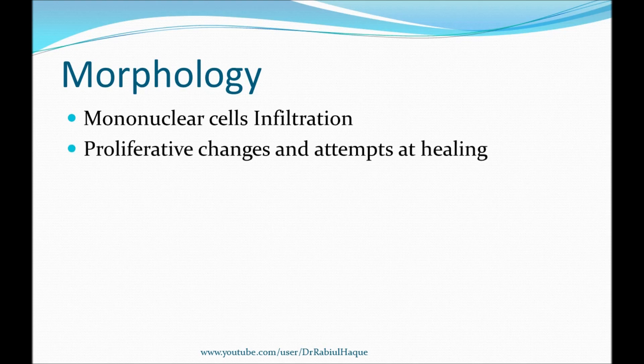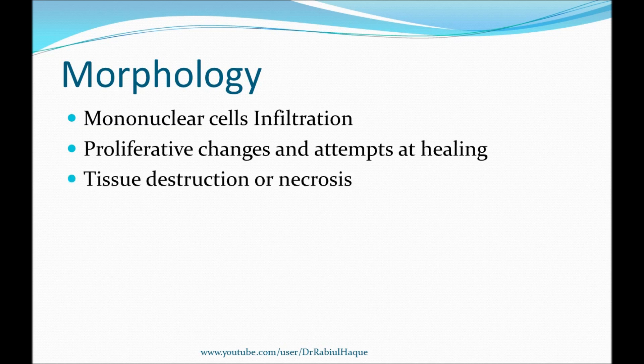The next morphologic feature is tissue destruction. Tissue destruction can happen in two ways: it can be induced by the persisting offending agent, or it can happen due to the inflammatory cells themselves. The next morphologic feature is attempt at healing, which will include angiogenesis — formation of new blood vessels — and also fibrosis.